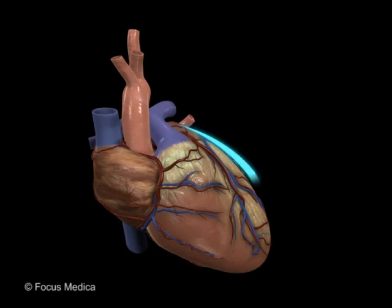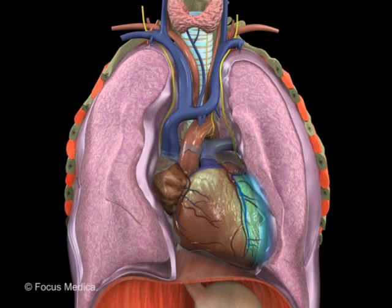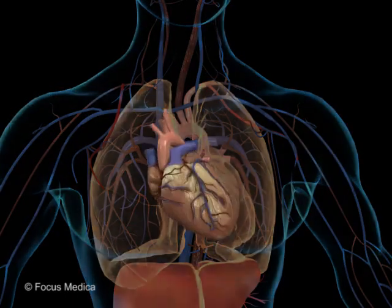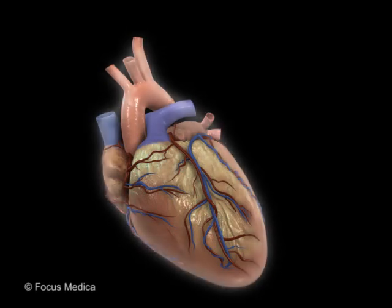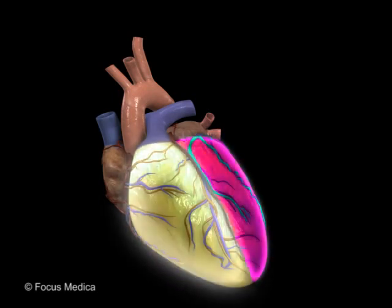The left border extends to the left part of the thoracic cage from the level of the third costal cartilage to the fifth intercostal space. This border and surface is closely related to the left lung, and part of the anterior border of the left lung overlaps the anterior aspect of the heart. This border is formed by the left atrium and the left ventricle. The inferior border is seen below the anterior or sternocostal surface. It is formed by the right ventricle predominantly, with the left ventricle forming the left one-third.